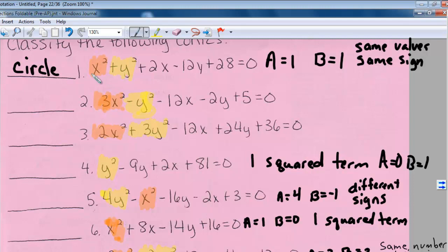Example two, again I'm not looking at any of these items, I'm just looking at 3 and negative 1. So my a is 3 and my b is negative 1.